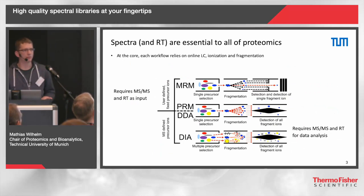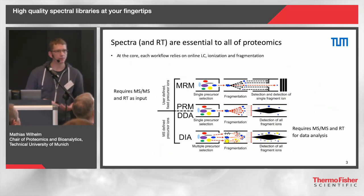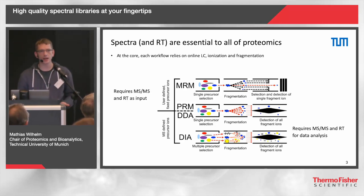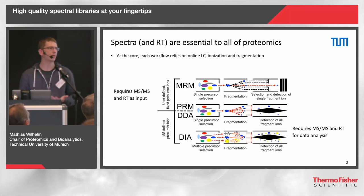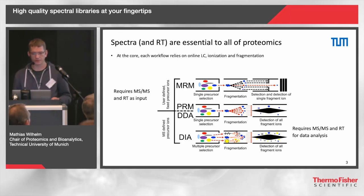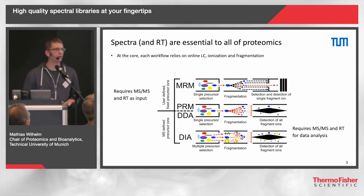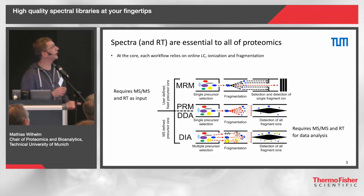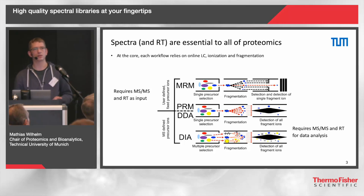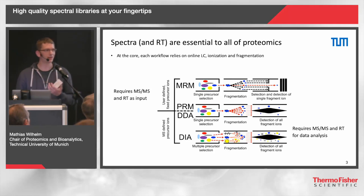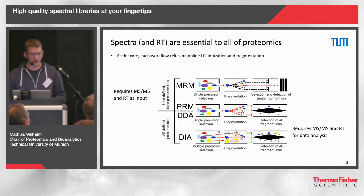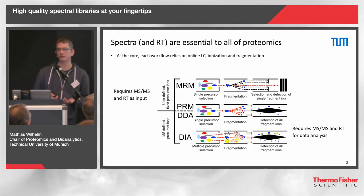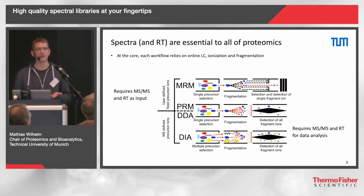Spectra are at the core of what we do — be it DDA measurements, MRM, DIA, cross-linking — no matter what we do, spectra are the things we tend to look at. We either require them for setting up our acquisition methods, or we require them for actually understanding our data. Spectra and partially also retention time are the most crucial, interesting information which I, at least as a bioinformatician, can get my hands on. However, we really don't yet have a good understanding of what they are and how they come about.